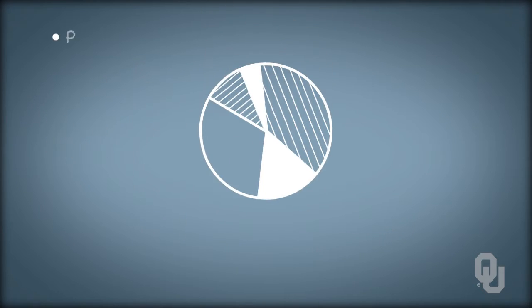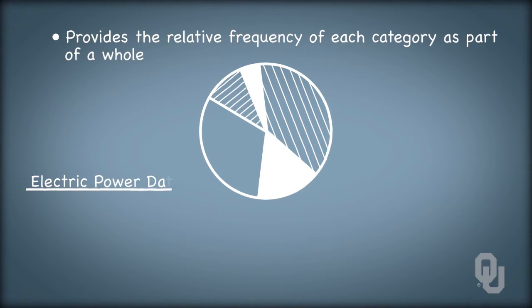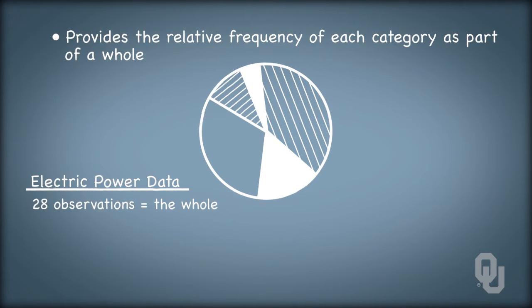A pie chart provides the relative frequency of each category as a part of a whole. With our electric power data, the 28 observations are considered the whole, and the categories are assumed to be the universe of categories that could have been witnessed in our data. In a sense, we aren't leaving ourselves any categories that could have occurred had we chosen a larger sample, and therefore uncovered a category less likely to have occurred in a sample of 28.